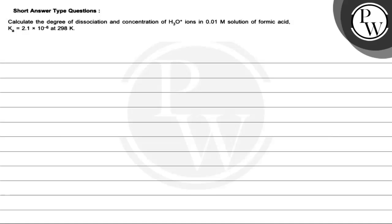Hello guys, let's read this question. Calculate the degree of dissociation and concentration of H3O plus ions in 0.01 molar solution of formic acid. Ka has been given as 2.1 into 10 to the power minus 6 at 298 Kelvin.